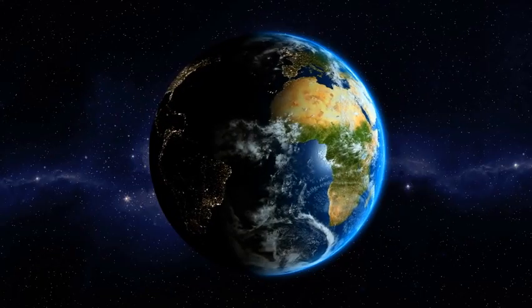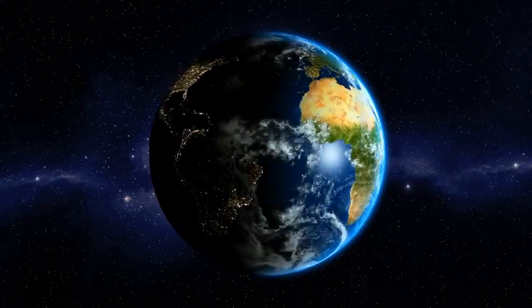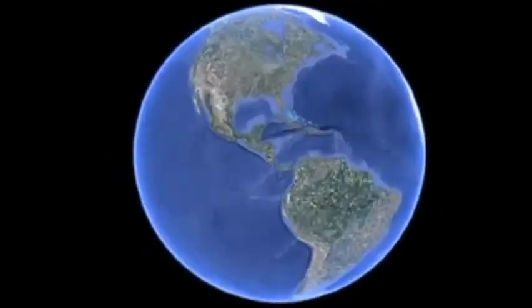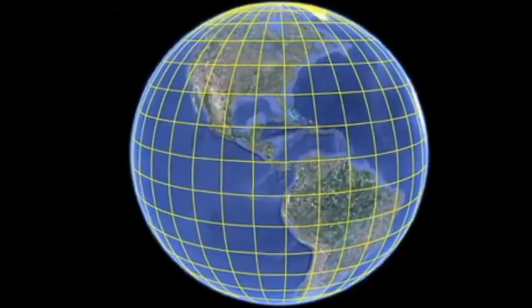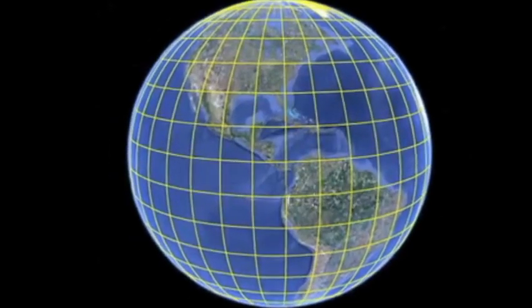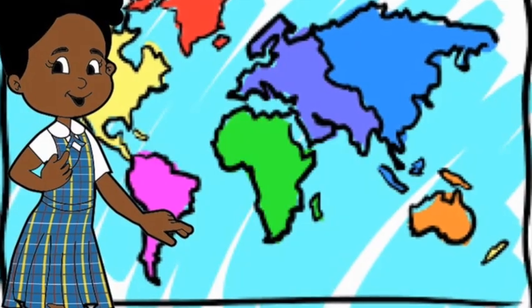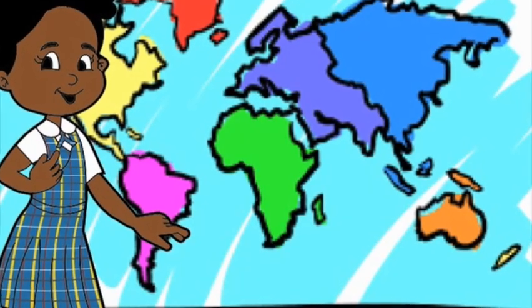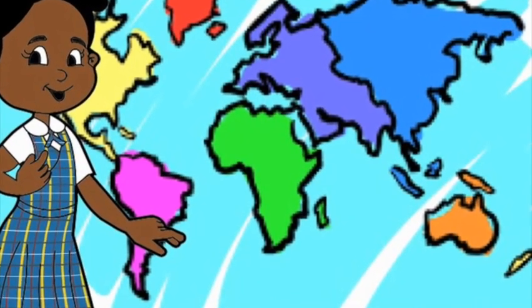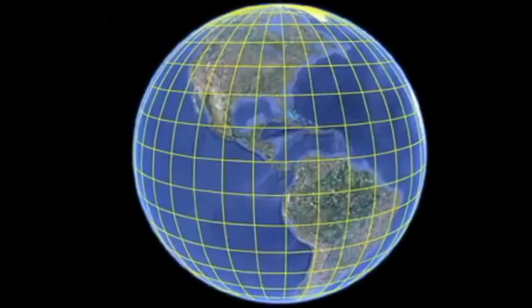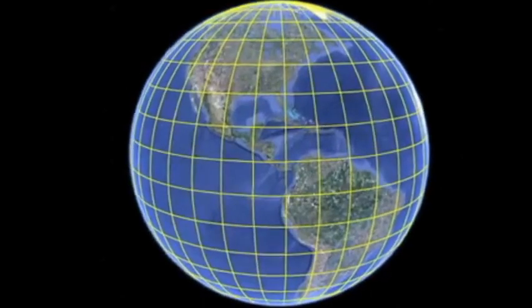The planet Earth is a huge sphere. Imaginary lines across the Earth help us to find specific locations on the map. These lines are measured in degrees because they are angular.